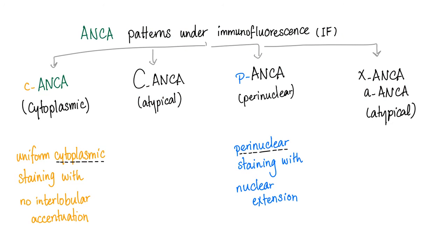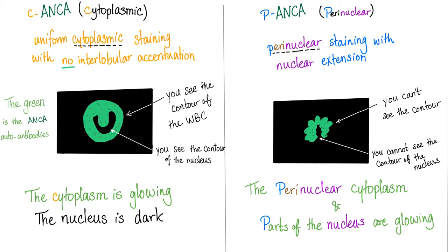ANCA has patterns under immunofluorescence. What we care about is C-ANCA and P-ANCA — cytoplasmic ANCA and perinuclear ANCA. C-ANCA shows uniform cytoplasmic staining with no interlobular accentuation, meaning it doesn't involve the nucleus. The green fluorescence only involves the cytoplasm. You can see the contour of the white blood cell — it's a monocyte. Look at the horseshoe shape of the monocyte nucleus. The cytoplasm is glowing, the nucleus is dark, and the demarcation is very clear.